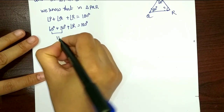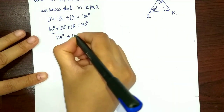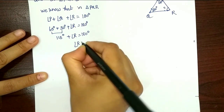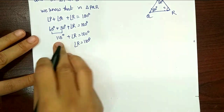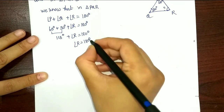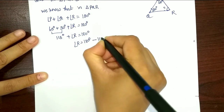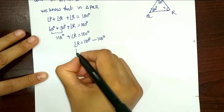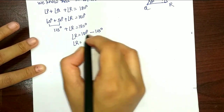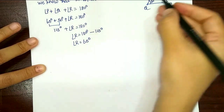So 65 plus 50 is 115. Angle R is equal to 180 minus 150 — that is, 180 minus 150 subtraction — angle R is equal to 65 degrees.